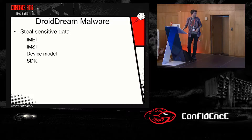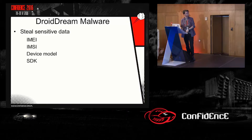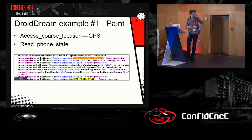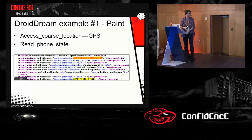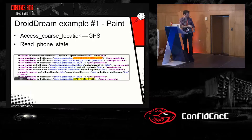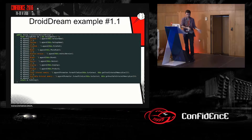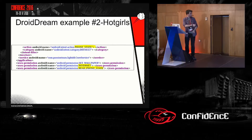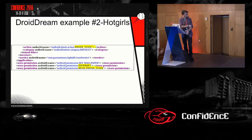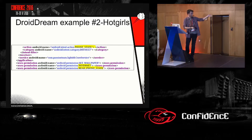Another kind of malware is DreadDream. This malware tries to steal sensitive data from your phone, like the IMEI, IMSI, device model, and so on. For example, here is another application that was in the market — it's a paid version of Draw Something — but this application was asking for your GPS position and the ability to read phone state. In the source code you can see it collects all the information from your phone and gets it ready to send to the attacker. It's the same pattern: some applications have more permissions than they actually need, and sometimes that means it's malware.